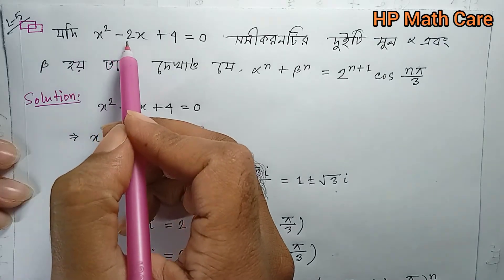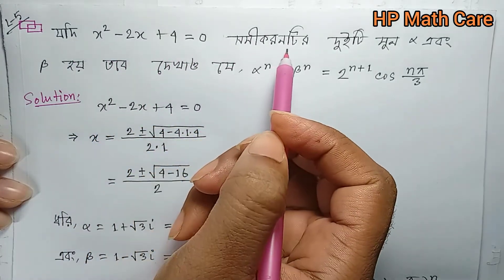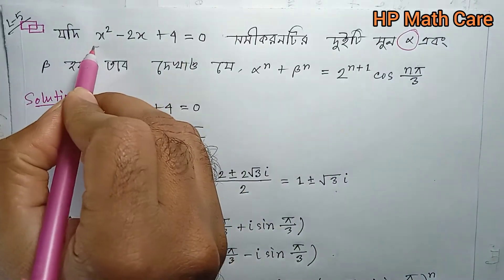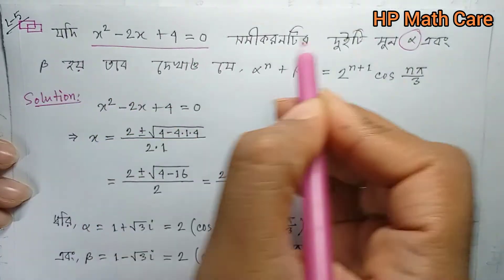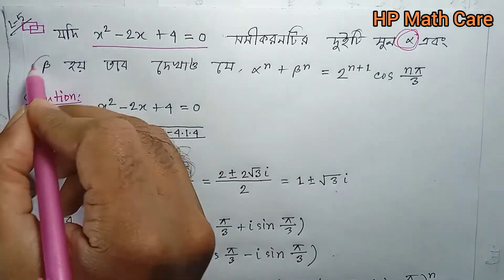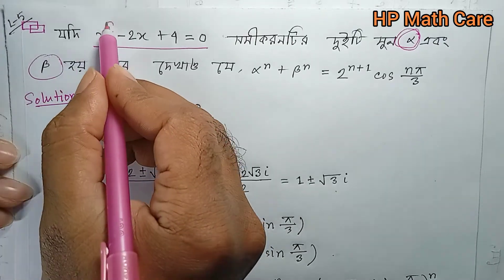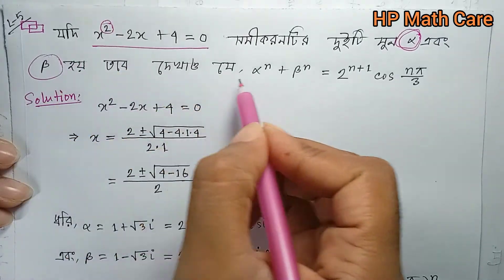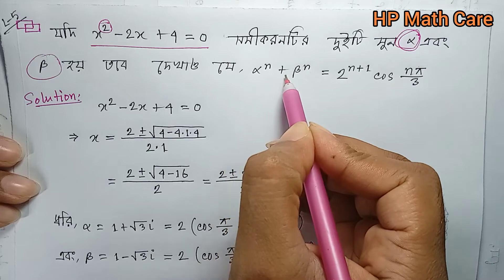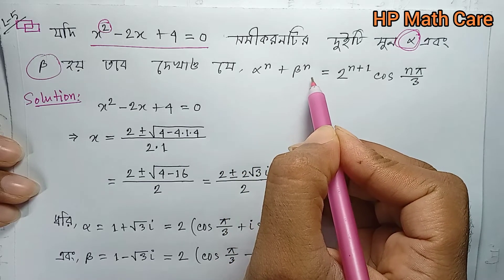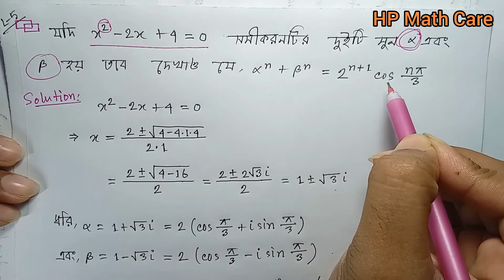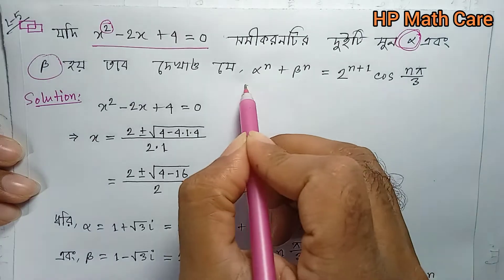The equation is x squared minus 3x plus 4 equals 0. So we have two roots: root 1 is alpha and root 2 is beta. Now, alpha to the n plus beta to the n equals 2 to the power n plus 1 times cos(nπ/3).